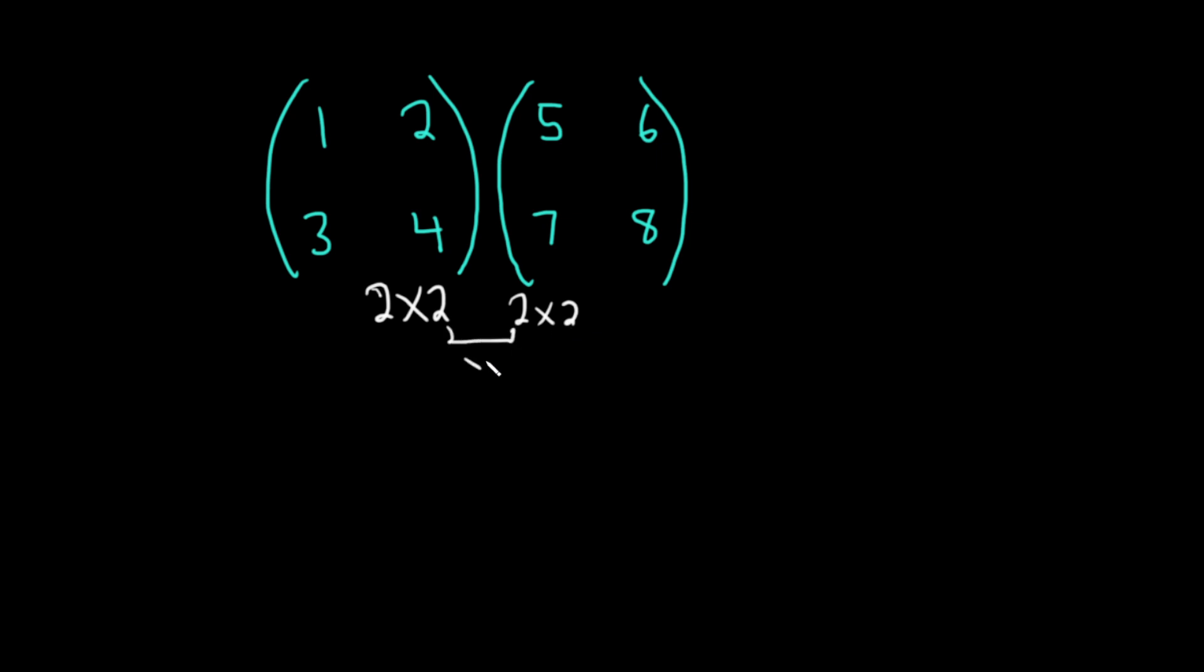Whenever these numbers are the same, yes, we can multiply the matrices. And the resulting matrix has dimension equal to the outer numbers, so two by two. Just good knowledge to have, because this is an easy example, but sometimes the numbers change. So if these numbers are the same, you can multiply. If they're not the same, you can't multiply.